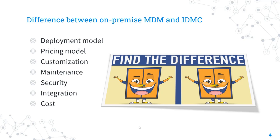Another key difference is their pricing model. On-premise Informatica MDM typically requires a larger upfront investment in both software and hardware. On the other hand, IDMC is priced on a subscription basis, making it easier for organizations to manage their data management costs. You can evaluate whether the cloud version makes sense for your organization based on both functionality and cost.